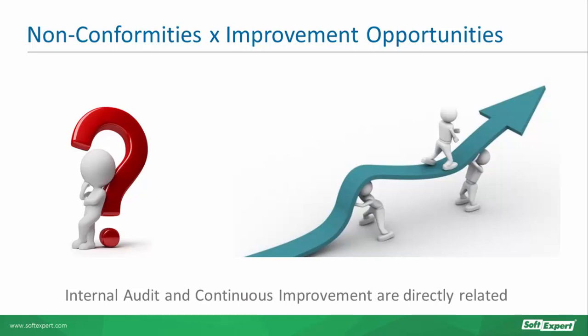This action is known as an improvement action. Most management systems have difficulties accepting non-conformities, when their focus should be on solving them in order to grow and make their management system more robust, with greater reliability and credibility. More important than finding a guilty party is the identification of the root of problems and taking corrective actions to prevent their recurrence. In this way, we are taking advantage of all the effectiveness and power of this tool — the internal audit.